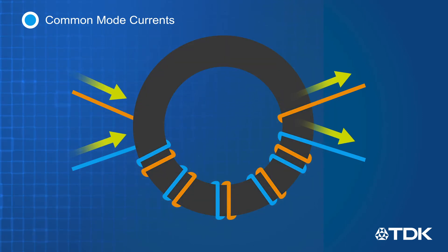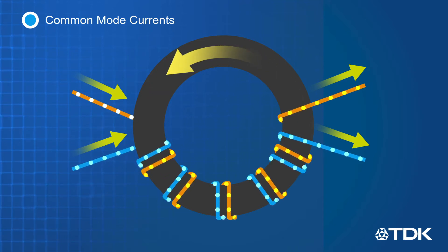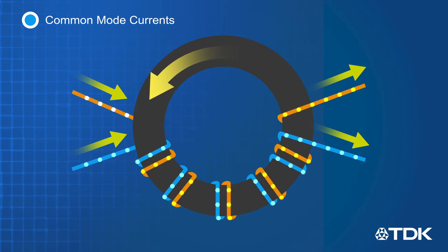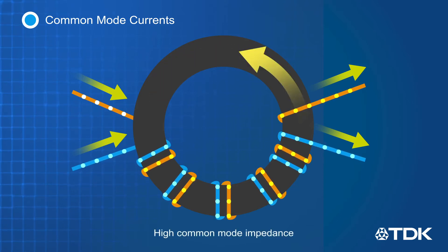Common mode currents flow into the wires in the same direction. The current flow through each wire creates a magnetic field, and because the current flow is the same direction for both wires, the magnetic field current adds together. This results in a high common mode impedance and filters out common mode noise.